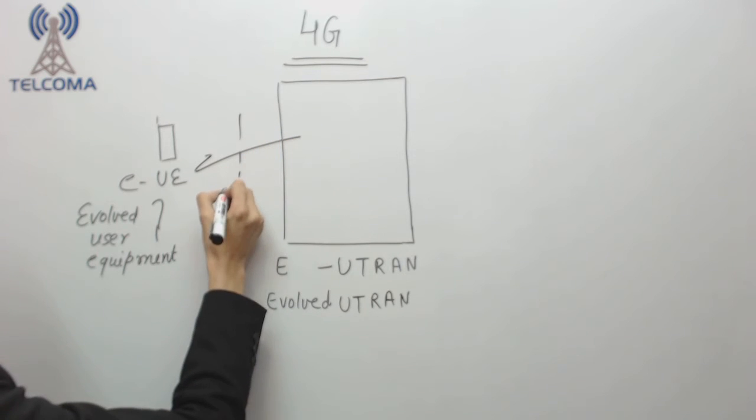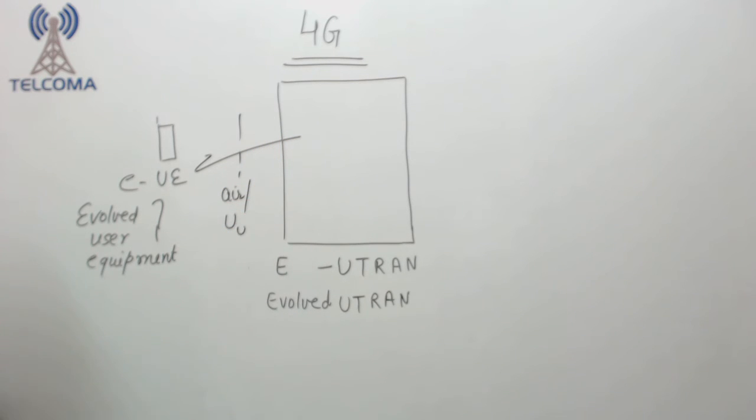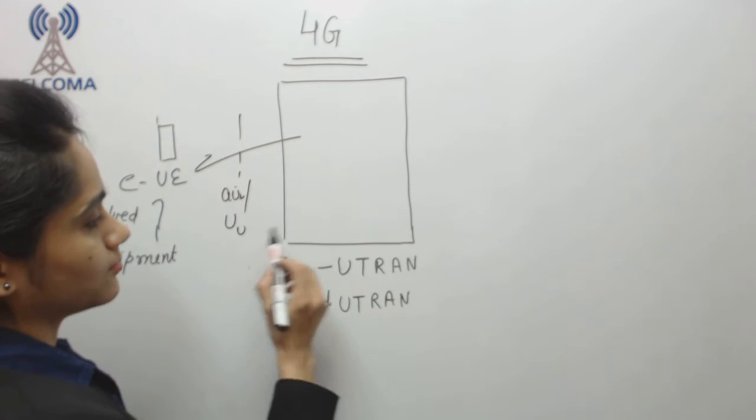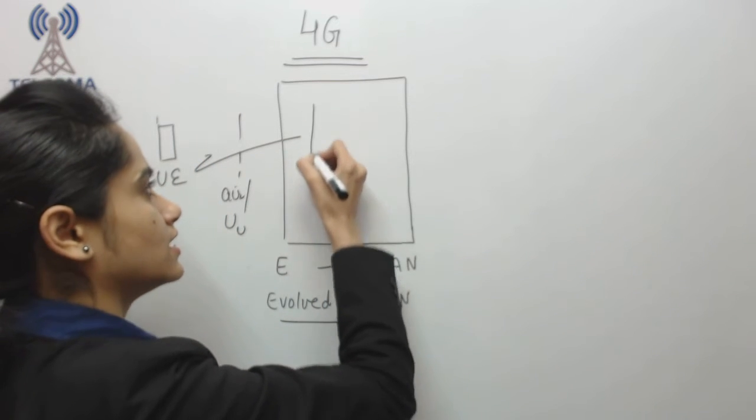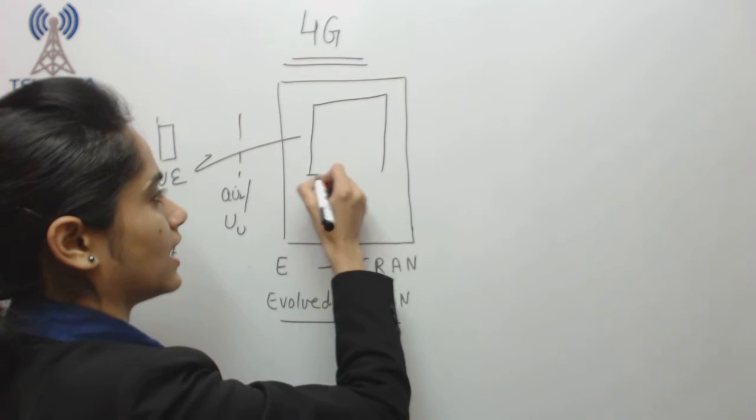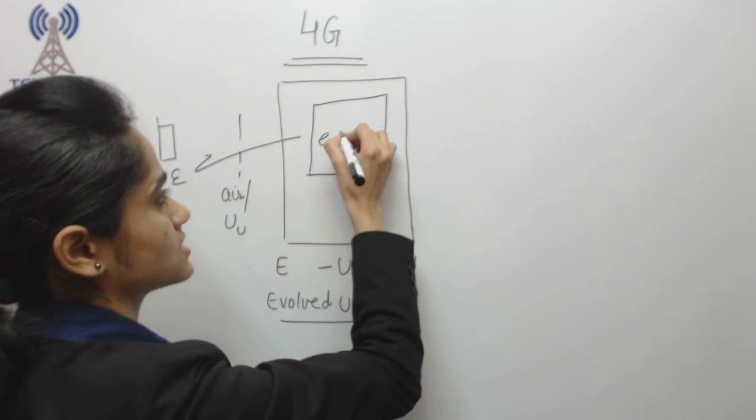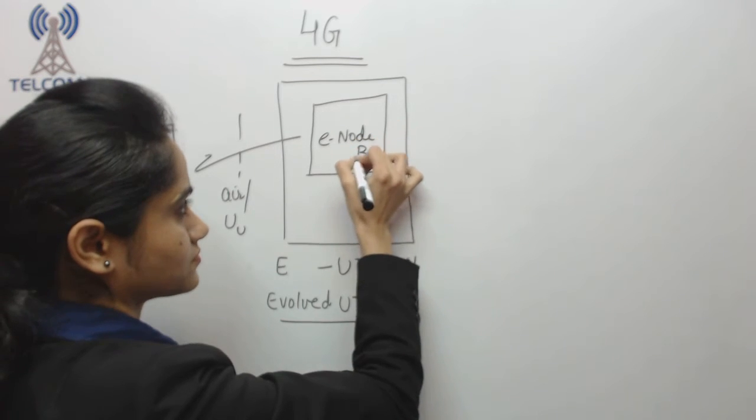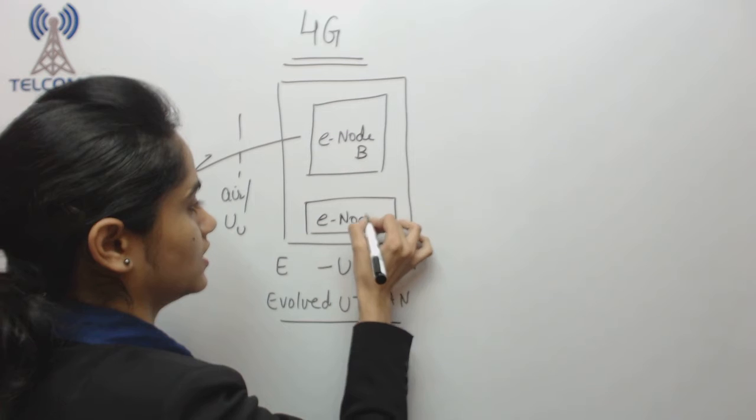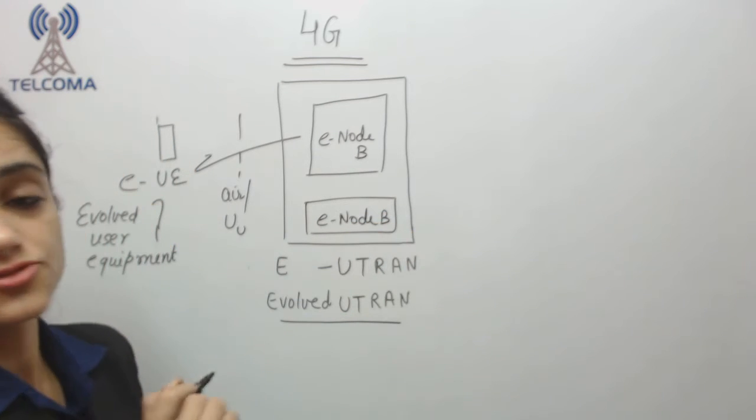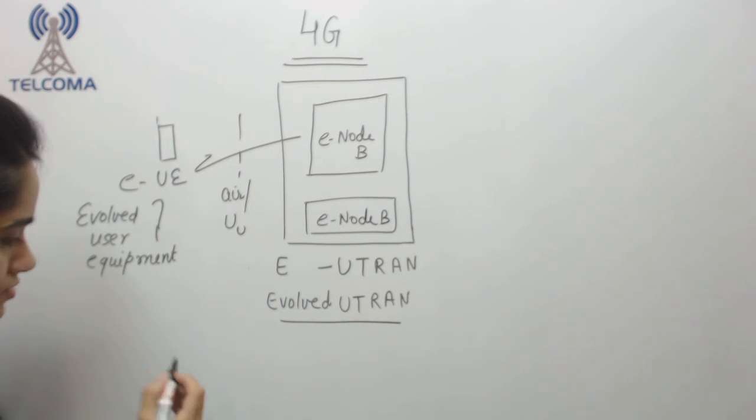So this EUE will be attached with the help of UU interface, we call as user to user interface, with the help of UU interface to EUTRAN part. Now here in this part we don't have any RNC attached, that means we have removed RNC. We have only E node B, evolved, again E stands for evolved.